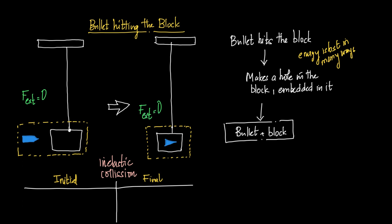If the net external force acting on the system is equal to zero, then momentum is conserved. Therefore, initial momentum equals final momentum. When the bullet hits the block, it makes a hole and gets embedded inside. So the bullet and block together now act as a single body.